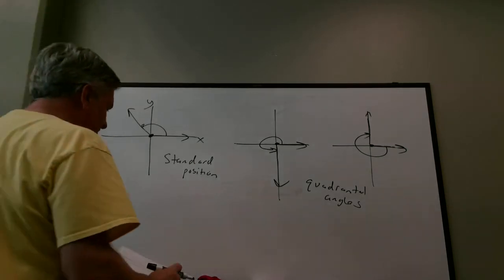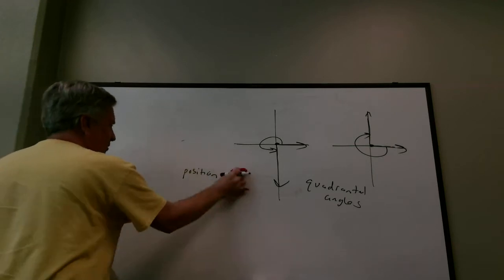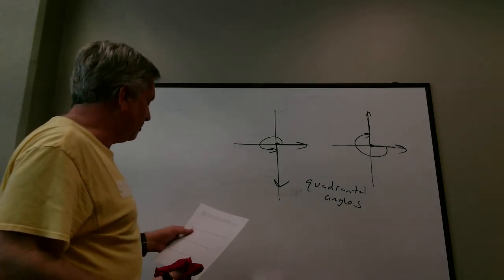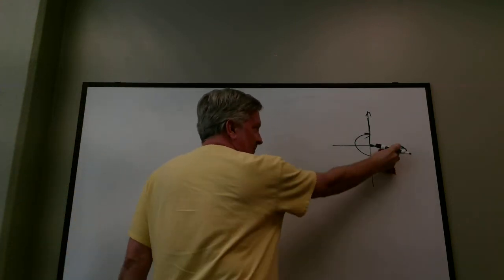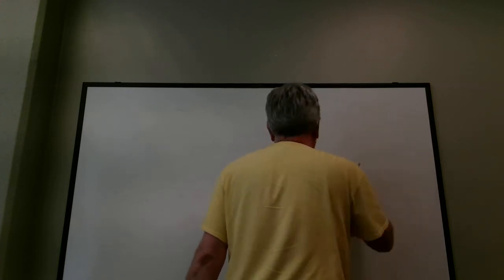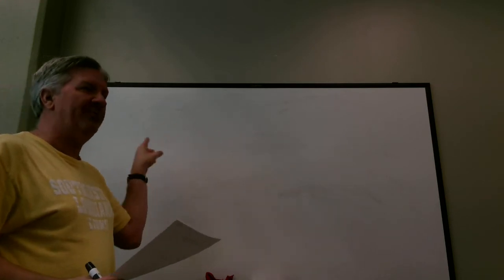Angles in standard position with the same terminal side are called coterminal angles. If initial sides are the same (standard position) and terminal sides are the same, the only possible difference between those angles is the rotation. If you leave off the rotation, coterminal angles look exactly the same — initial and terminal sides in identical positions.